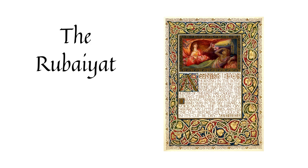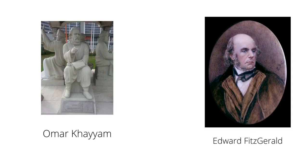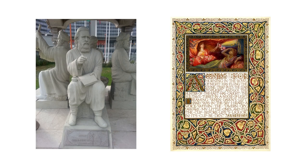The most popular Rubaiyat in the world is the Rubaiyat by the Persian poet Omar Khayyam, and its most popular translation is that of Edward Fitzgerald in 1859. The Rubaiyat is composed of many quatrains. A quatrain is a stanza composed of four lines.